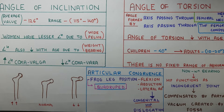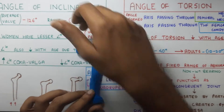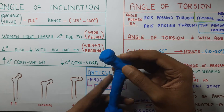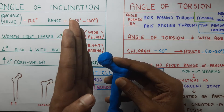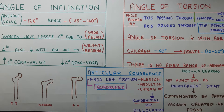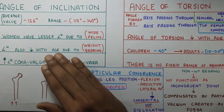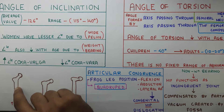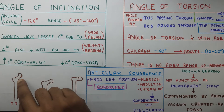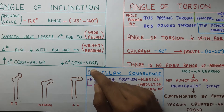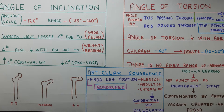This angle also reduces with age. As your age increases, due to weight bearing, your angle of inclination keeps reducing. A pathological increase in the angle of inclination is called coxa valga — that is an increase in the medial angle, and medial is always valgus. If there is a reduction in the angle of inclination, it is called coxa vara.